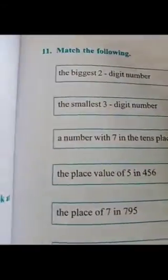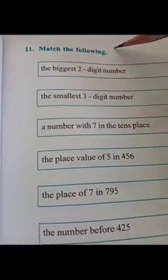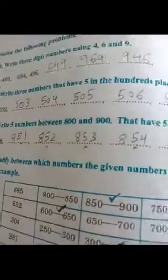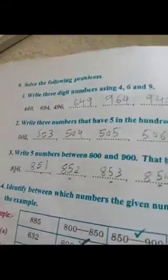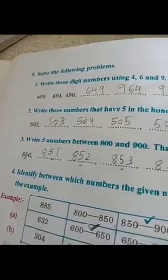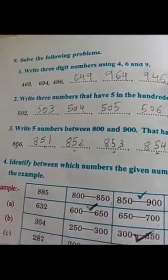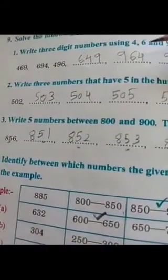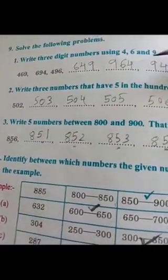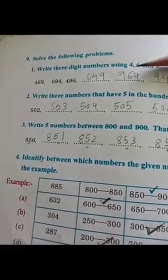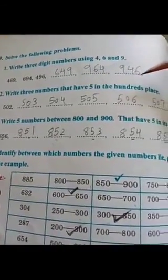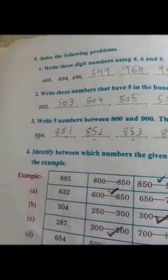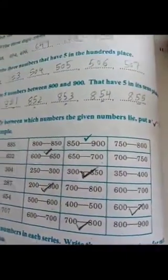Match the following. In previous class, what did we learn? Three digit numbers. Some numbers to make three digit numbers using some numbers — and making three digit numbers only. Okay, observe children this.